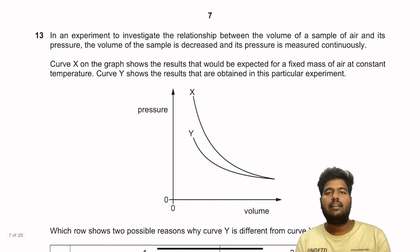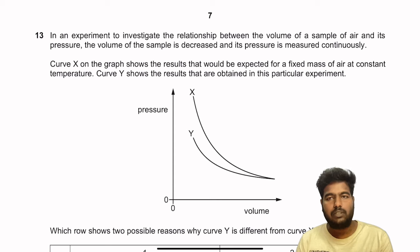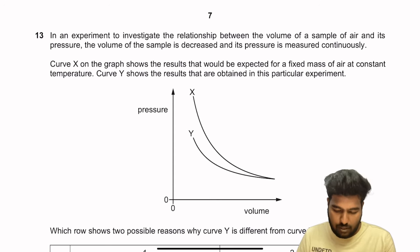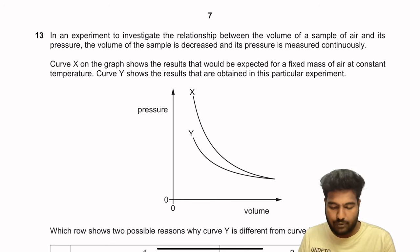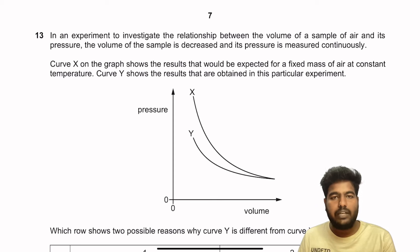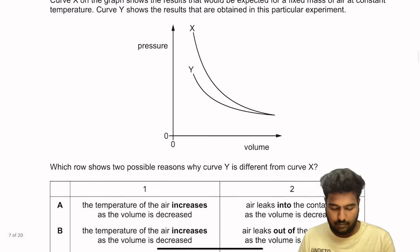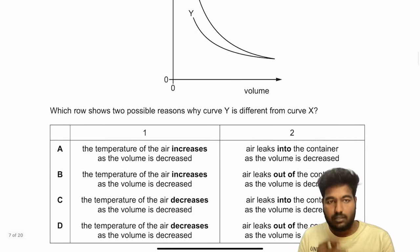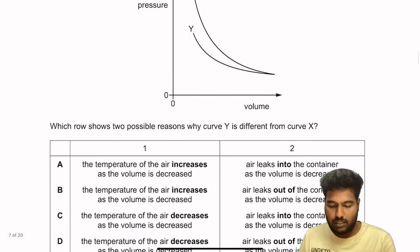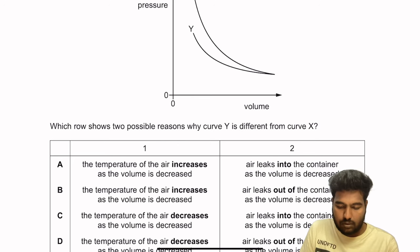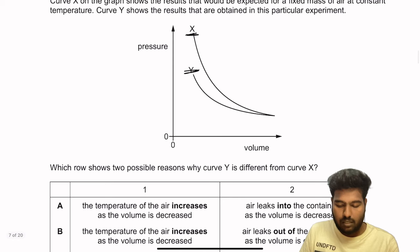Question 13: An experiment investigates the relationship between volume and pressure of a sample of air. Curve X shows the theoretical result for fixed mass at constant temperature. Curve Y shows the actual result obtained. The pressure in curve Y is lower than the theoretical value, meaning either the volume decreased or air particles leaked out.